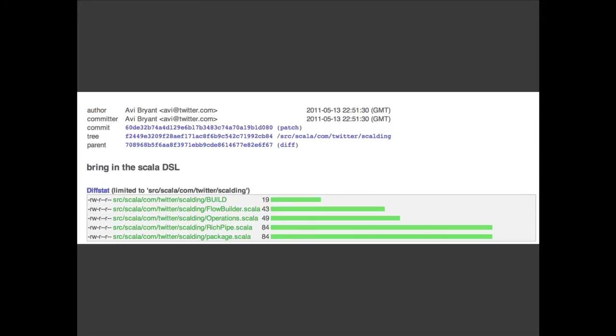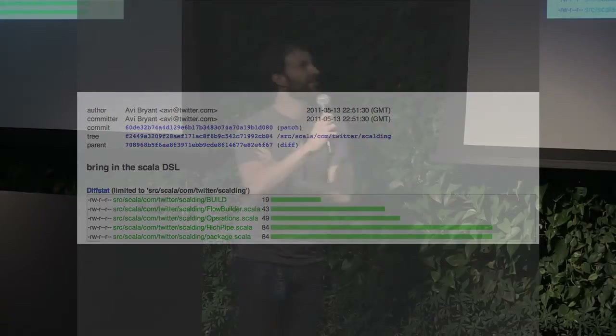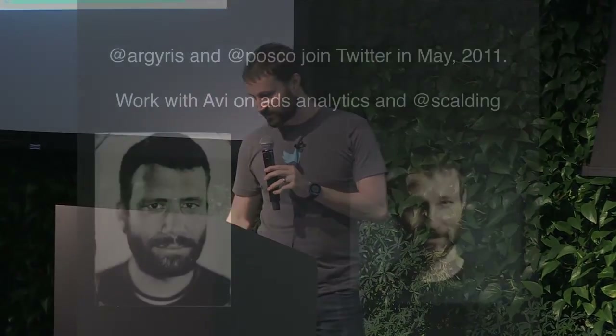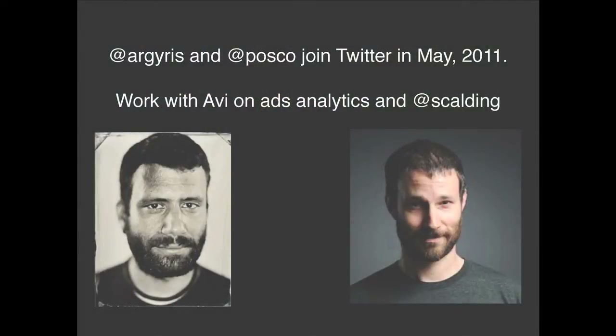I found the first commit to the repo Scalding lived in. Avi can tell you more, but there were a few hundred lines of code. That's the sort of origin of Scalding. Scalding initially really sucked — we needed to do some quick aggregations, did something that worked okay, and wanted to use Scala because we could use UDFs right inline.